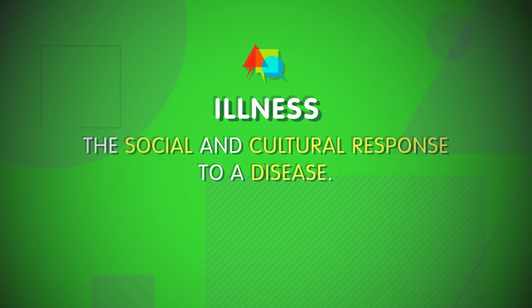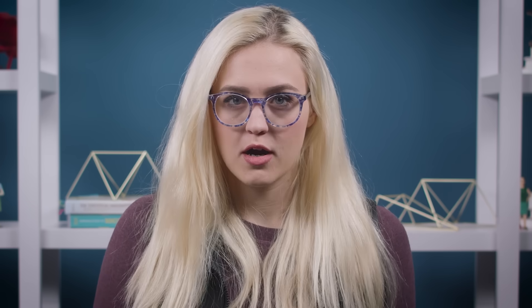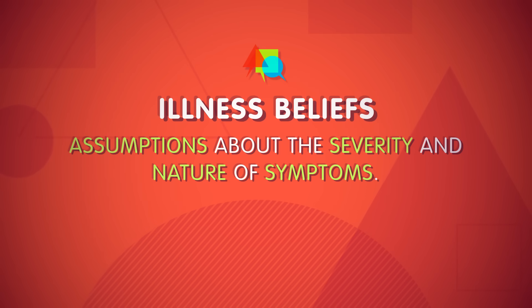Another way medical sociologists approach health is to look at illness. It's sometimes said that a person walks into a doctor's office with symptoms, but leaves with a disease. While a disease defines a dysfunction of the physical, an illness is the social and cultural response to a disease. Your perception of illness is likely to vary a lot depending on who you are. People have what are called illness beliefs – assumptions about the severity and nature of symptoms. An illness belief doesn't have to be accurate, but the accuracy matters less than how the beliefs make you feel. Illness beliefs help explain why some people seek treatment for symptoms while others may ignore them, or why some people strictly adhere to medical advice while others blow it off. Factors like race, social class, gender, or age can shape illness responses to disease as well.